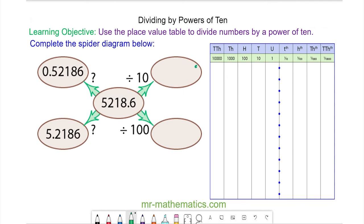Okay, we're going to begin by working out this value. We have 5,218.6. And we're dividing it by 10. So every number moves to the right by one place. So we have 521.86.